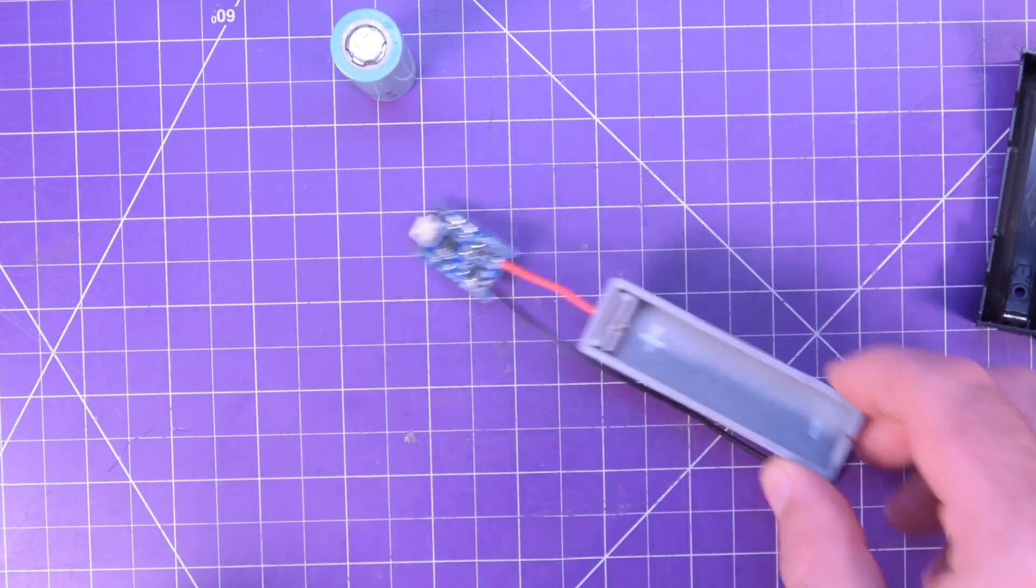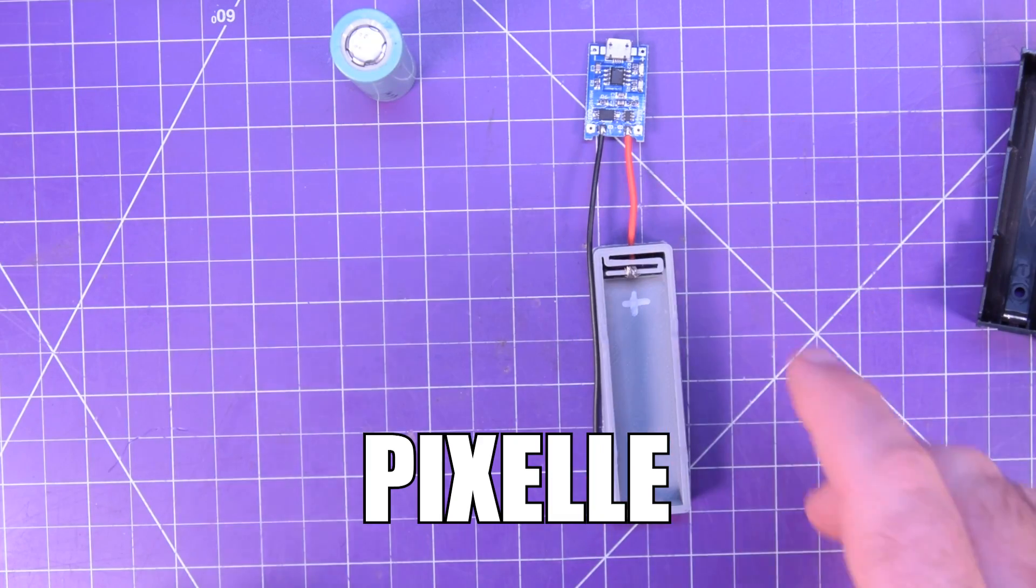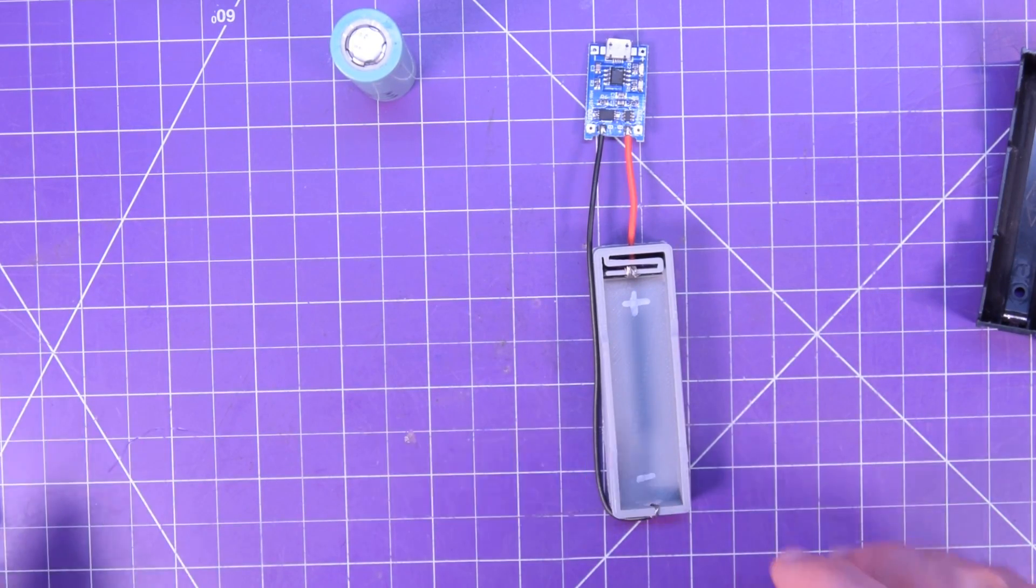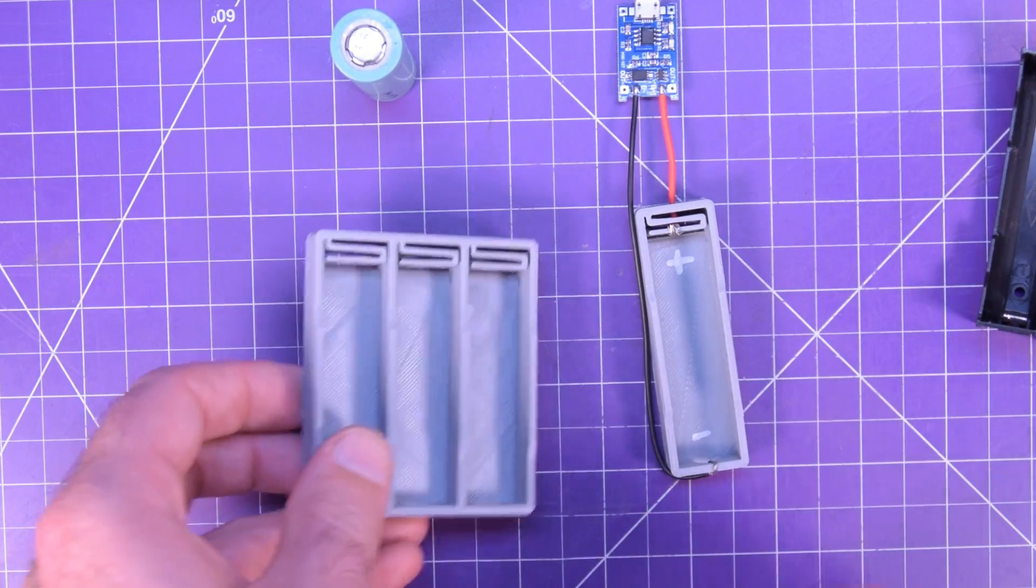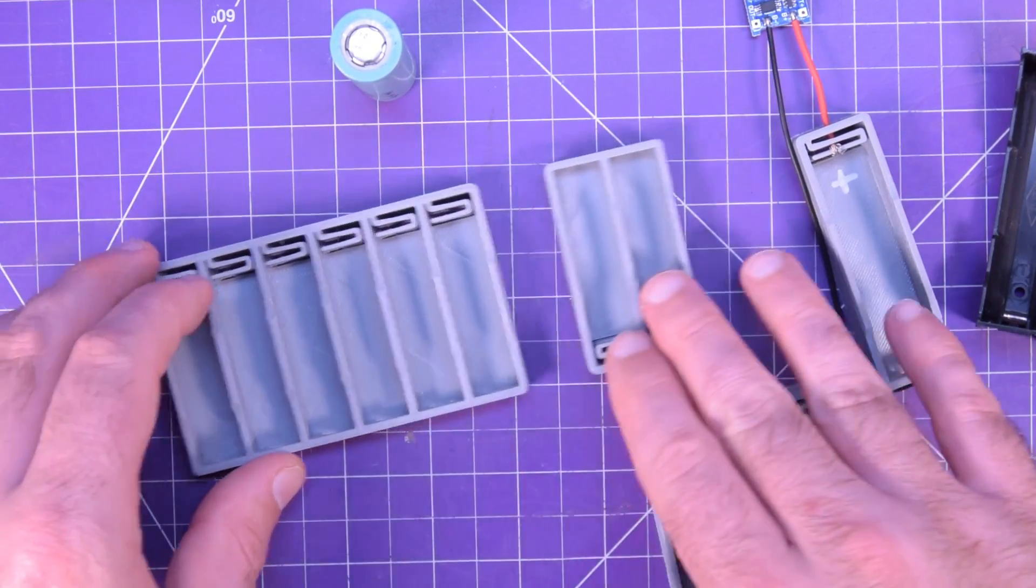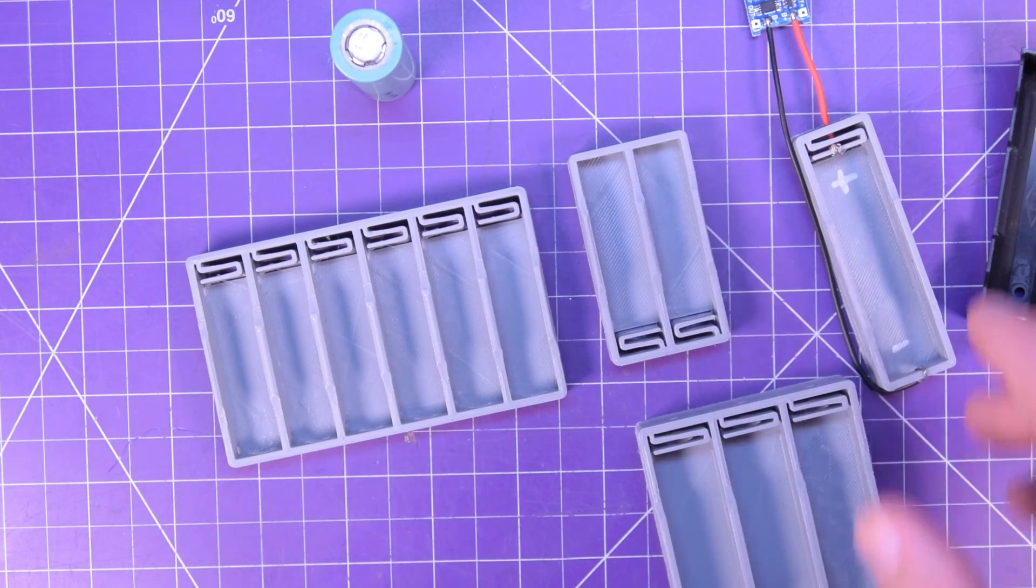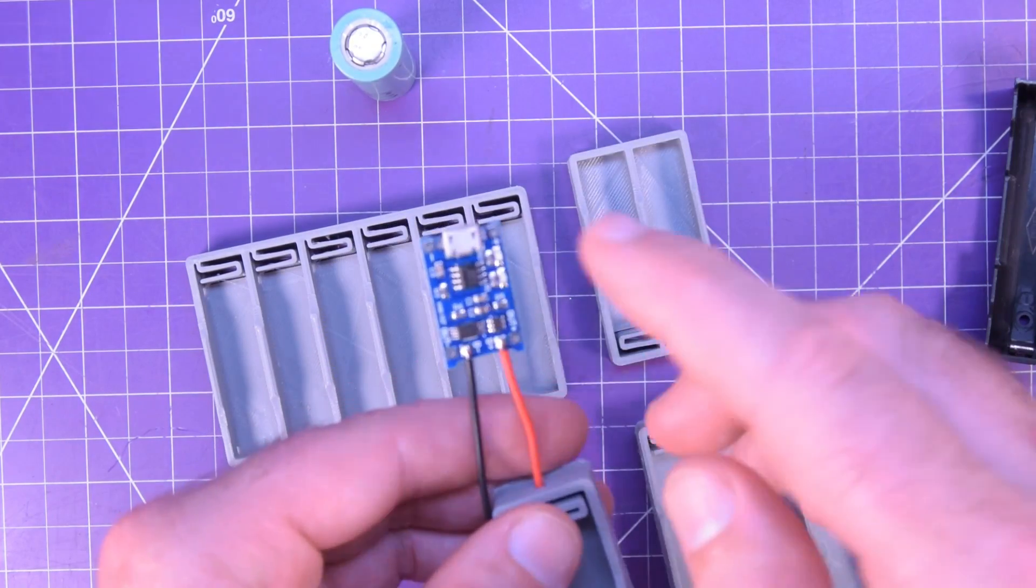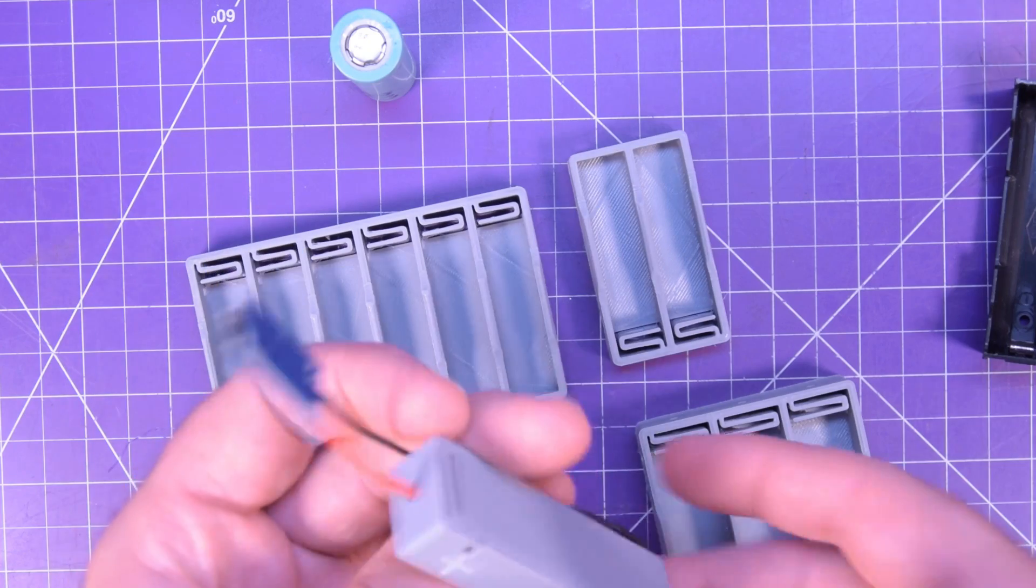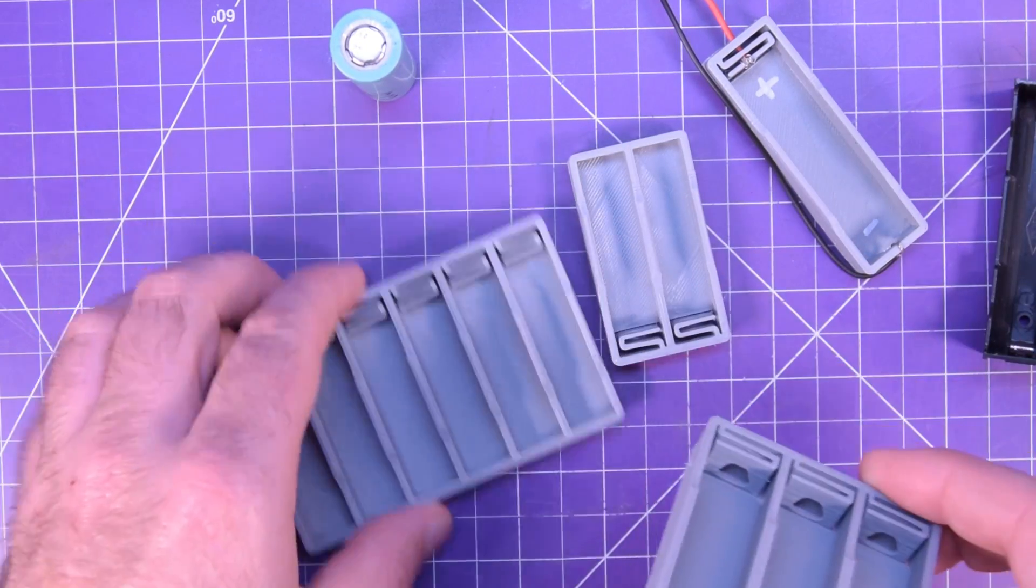These are battery boxes from user Pixel on thingiverse.com and Pixel not only made them in 1 to even 6 18650s, they also made them in 1 to 6 AA batteries which is pretty neat. So you can either make these little TP4056 chargers like this or you can make whole battery banks if you want.